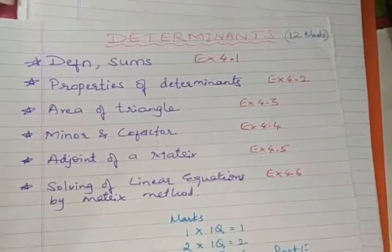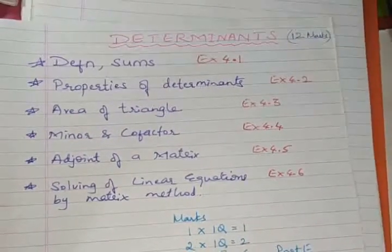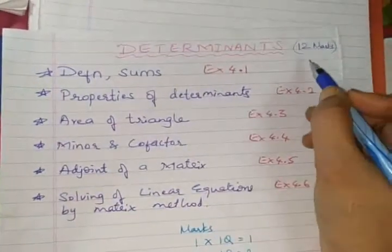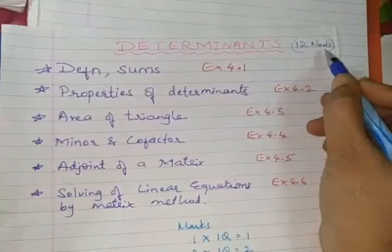Hello students, today we will start with one more new chapter, determinants. The overall marks allotted for this chapter is 12 marks.